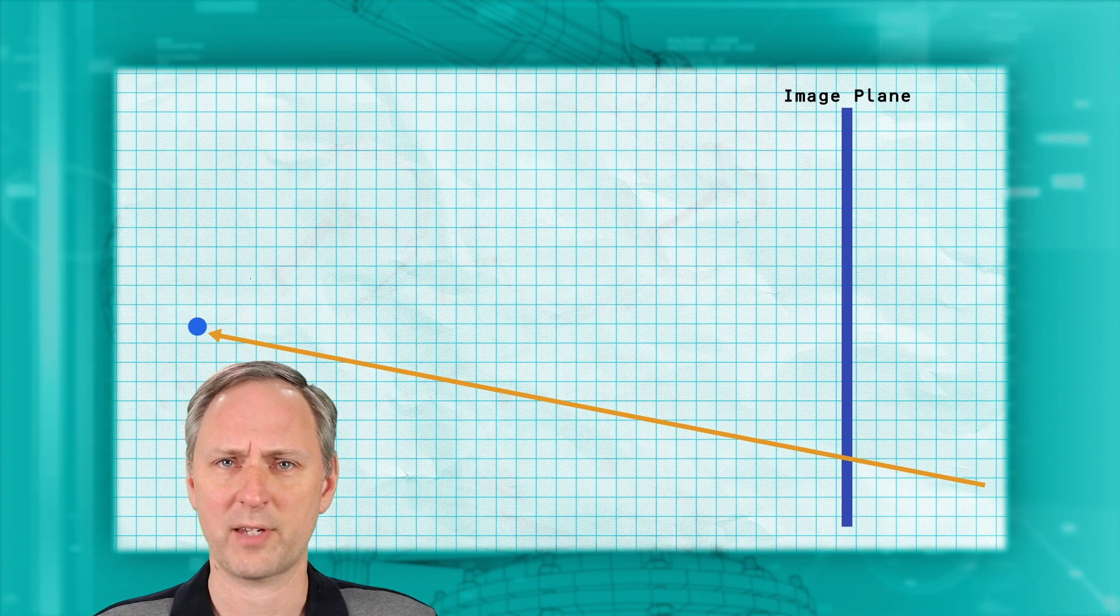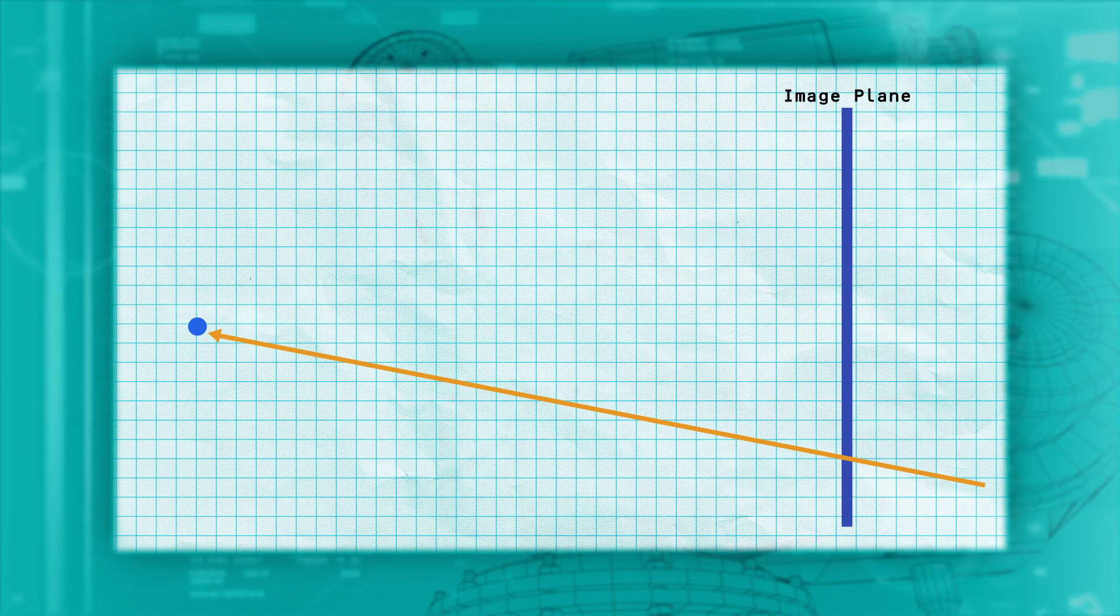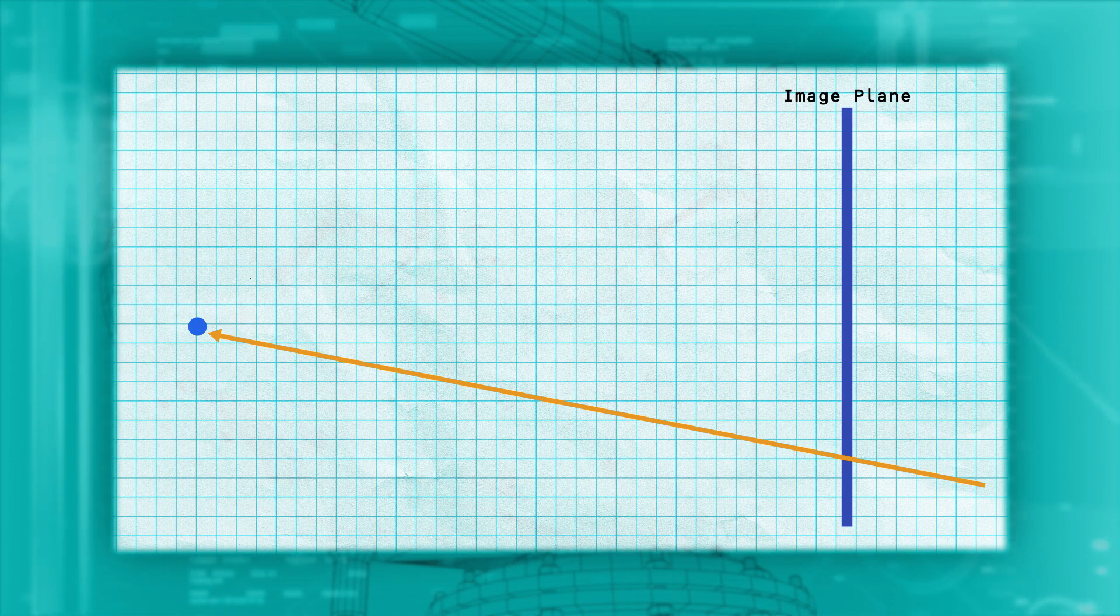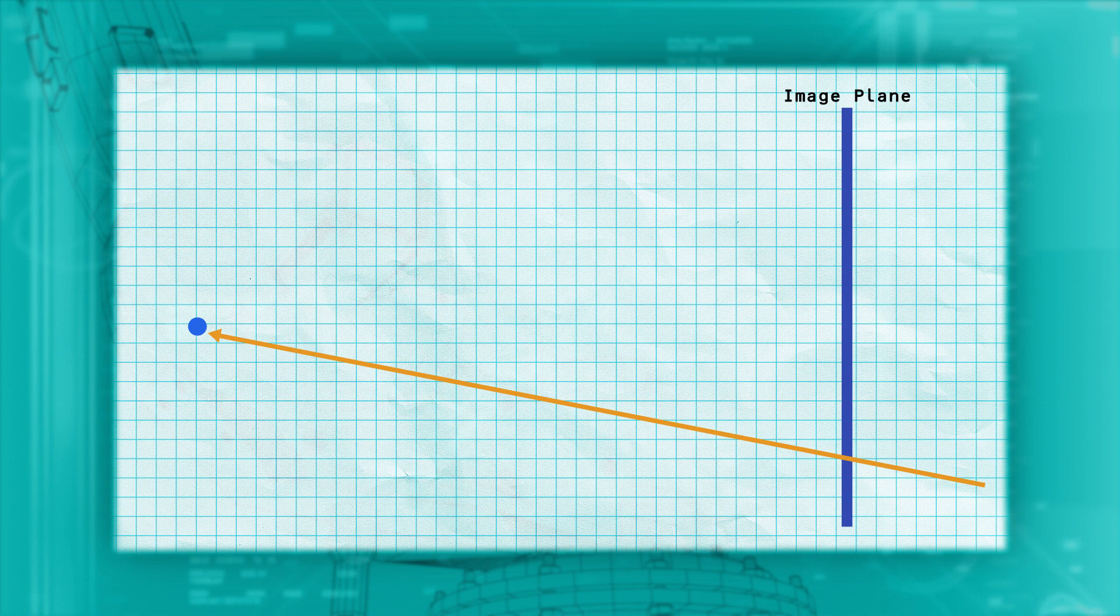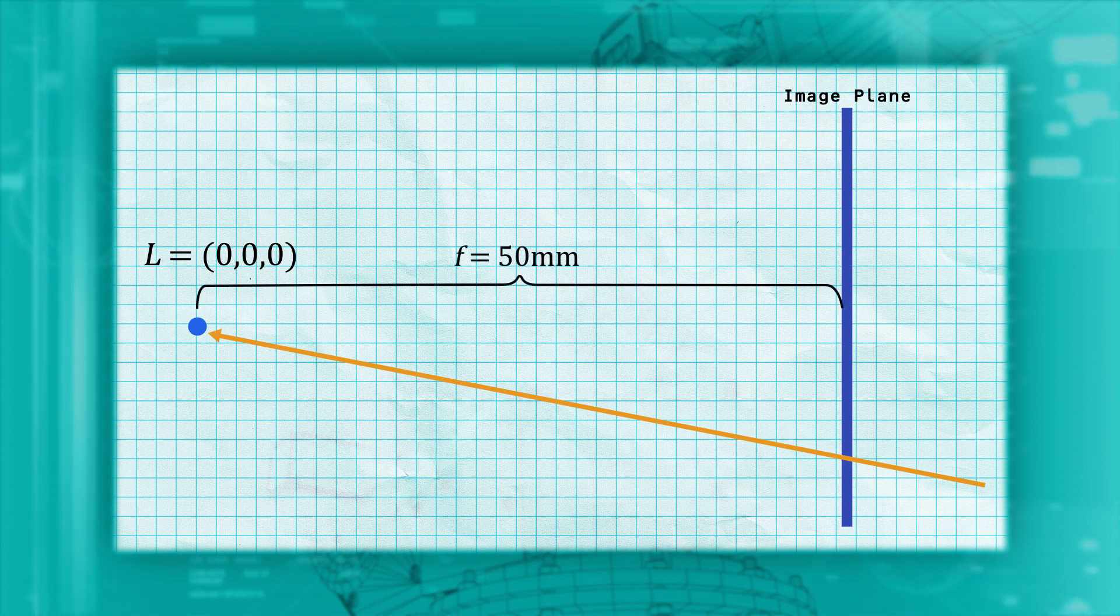So how can we determine the distance to the tree from this information? Let's start by looking at the left camera up close. What we want to know is which way the orange ray is pointing. We want the equation for that line. Let's set the left camera center to be at zero zero zero. We know the camera characteristics: in this case the focal length is 50 millimeters.